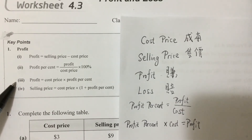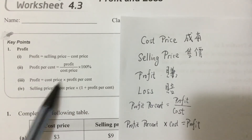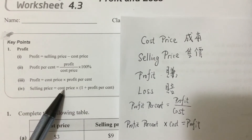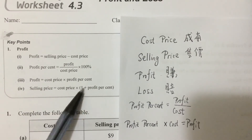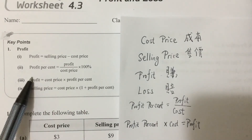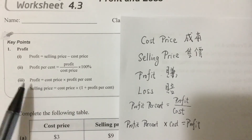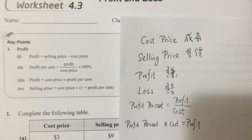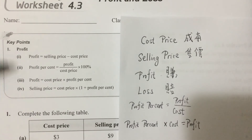Formula 2 and Formula 3 are equivalent. Finally, Formula 4: selling price equals cost price times (1 + profit percent). This means cost price plus cost price times profit percent — the second term is the profit — and adding them together gives you the selling price. This is similar to Formula 1.